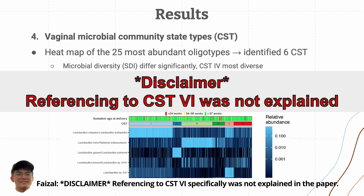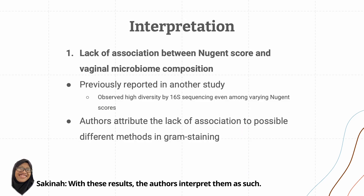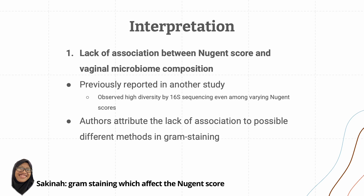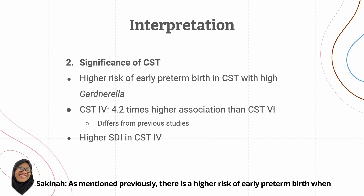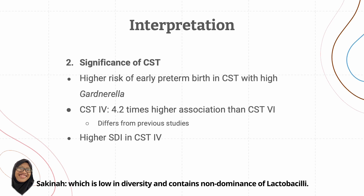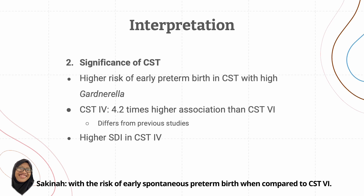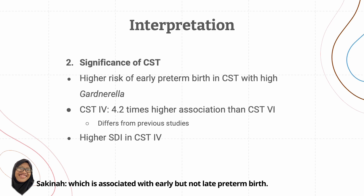A disclaimer: the referencing to CST6 was not explained in the paper. With these results, the authors interpreted them as follows. First, there was a lack of association between the Nugent score and the vaginal microbiome composition — surprising but not unexpected, as previously reported in other studies. They attributed this to possible different methods of gram staining affecting the Nugent score and the low abundance of bacteria found in samples. There is a higher risk of early preterm birth with high presence of Gardnerella as seen in CST4 compared to CST6, which is low in diversity and contains non-dominant lactobacilli. CST4 also has a 4.2 times higher association with the risk of early spontaneous preterm birth compared to CST6, and its notably higher SDI is associated with early but not late preterm birth.